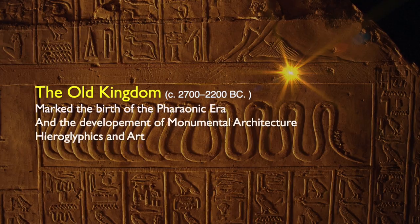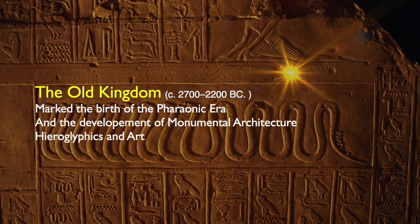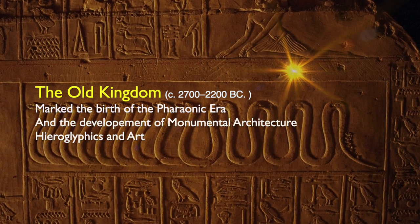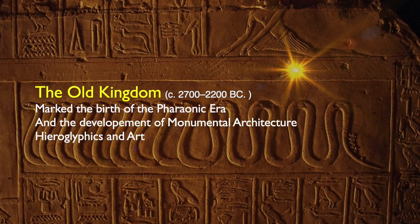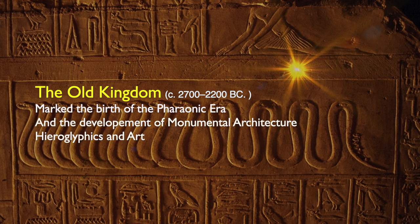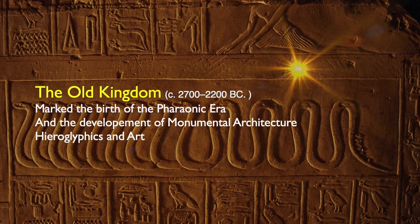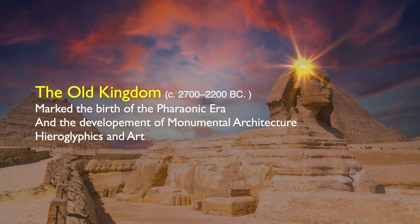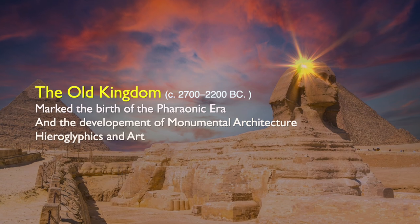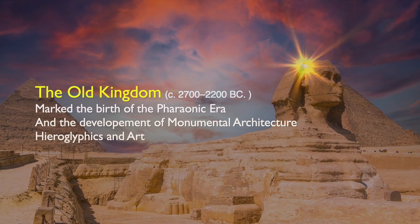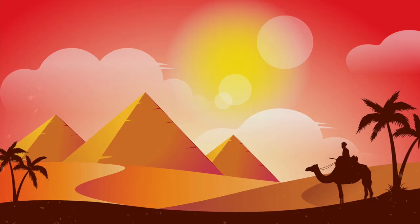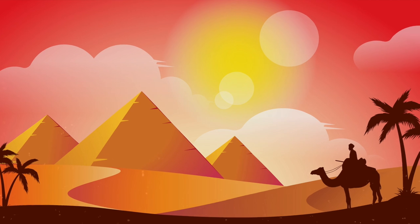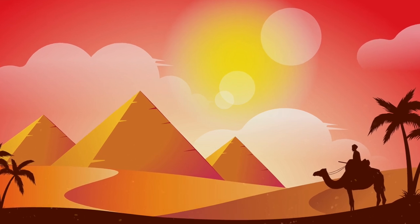In conclusion, the Old Kingdom period was a remarkable era in ancient Egyptian history. It marked the birth of pharaonic civilization and the development of monumental architecture, hieroglyphics and art. The legacy of this period continues to inspire and captivate people around the world today.